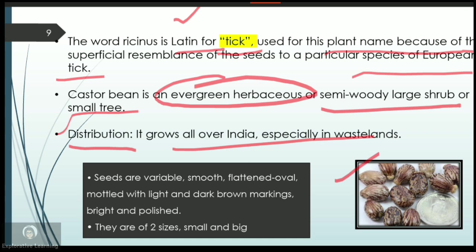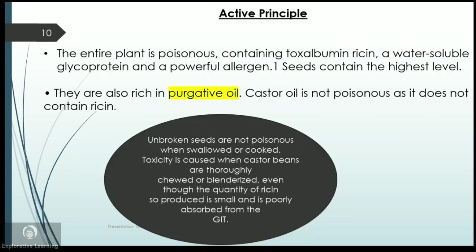The seeds are flat in shape and appear smooth. Their shape varies depending on location and the plant. They are often light in color with dark brown markings, as you can see here. They look bright and polished, but they are poisonous. They can be bigger or smaller in size.